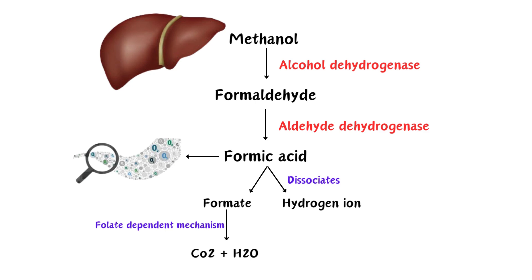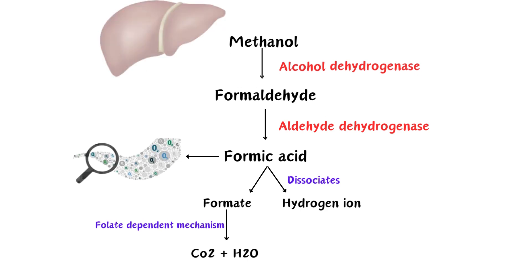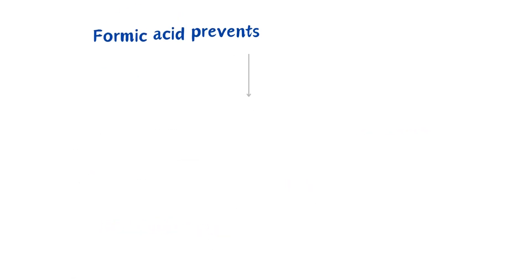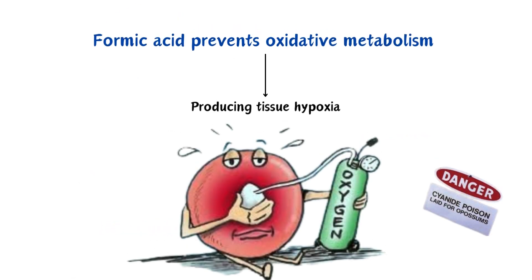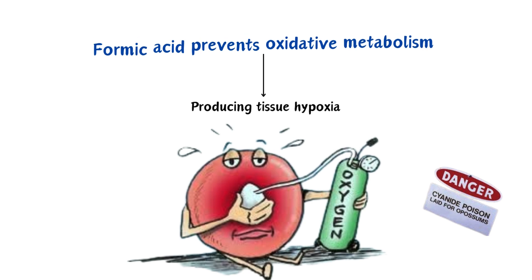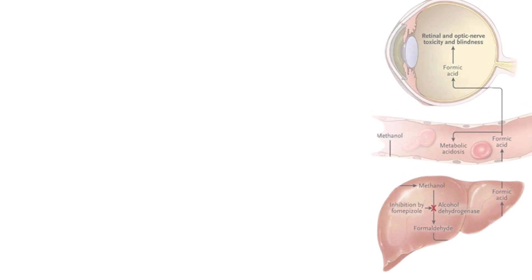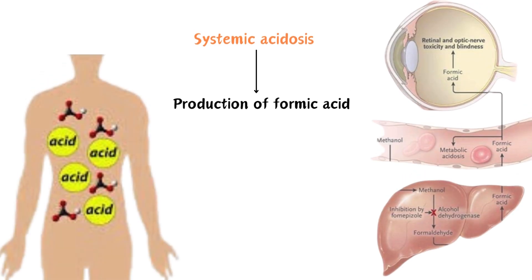The formate is eventually metabolized to carbon dioxide and water through a folate-dependent mechanism. However, formic acid inhibits mitochondrial cytochrome oxidase activity, preventing oxidative metabolism and producing tissue hypoxia, similar to the effects of cyanide and carbon monoxide. Systemic acidosis occurs due to the production of formic acid and lactic acidosis from inhibited cellular aerobic metabolism.